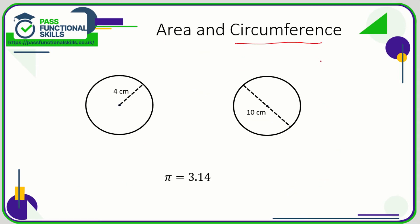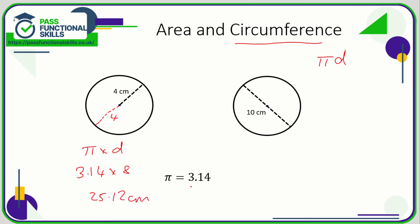The formula for the circumference of a circle is pi times the diameter. In this circle, the circumference is pi multiplied by the diameter. But we've been given a radius of four, so the diameter is four plus four, which is eight. The calculation is 3.14 × 8, which comes to 25.12 centimetres.